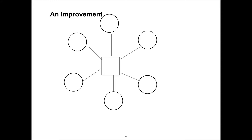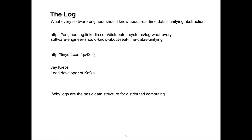So, put something in the middle — then everyone talks to it, and they can get the information they need. Kafka helped solve that problem, and there are three separate problems we'll talk about.